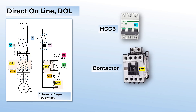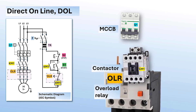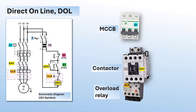Two: a contactor is an electromechanical device operated by an electric coil that allows automatic and remote switching to start or stop an electrical equipment. Three: an overload relay is a protection device that prevents motor burns or damage by monitoring the current of the motor circuit and breaking the circuit when an overcurrent being drawn by the motor is detected.